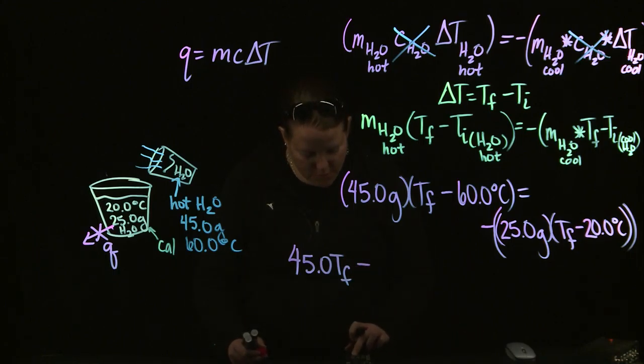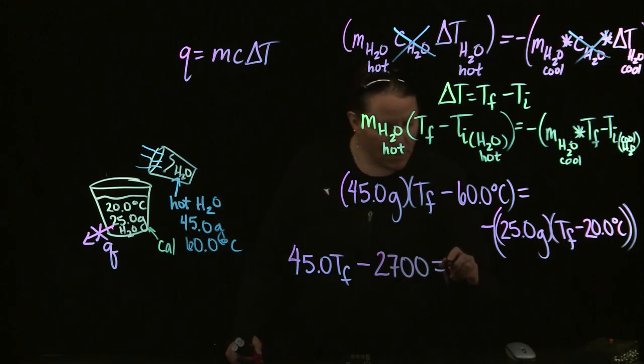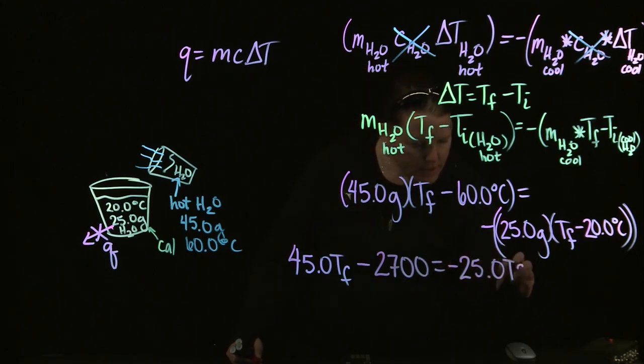45.0 T_F and 45 times 60 is 2700. Equals negative 25.0 T_F, and I'm going to distribute that out.